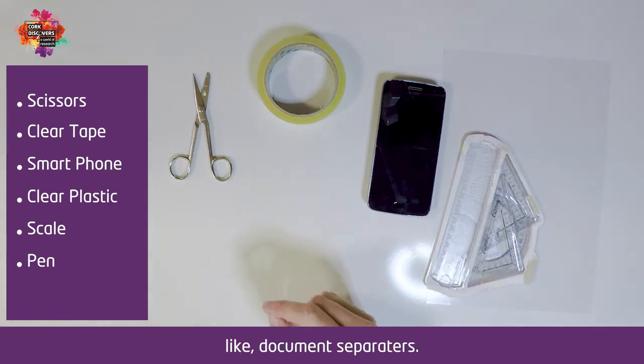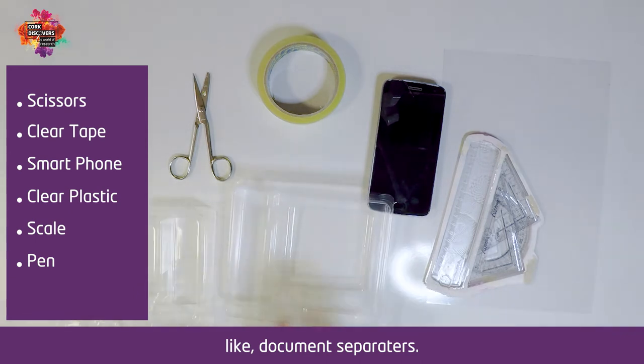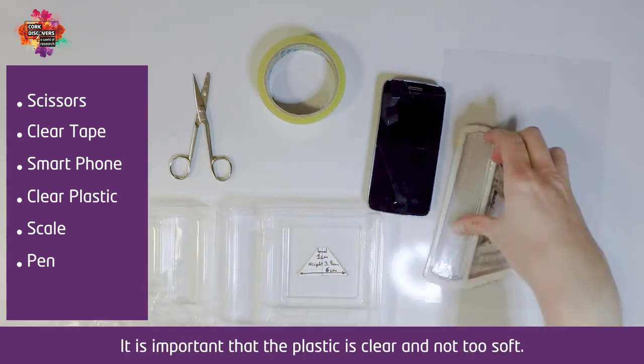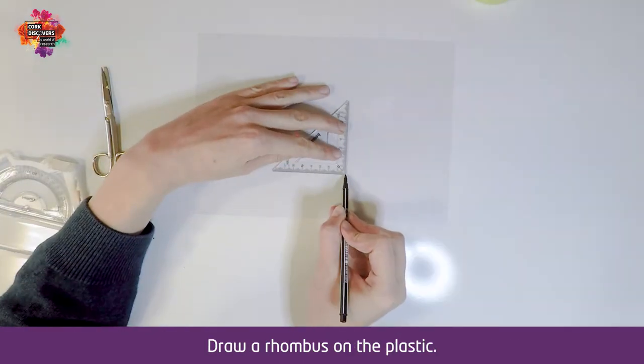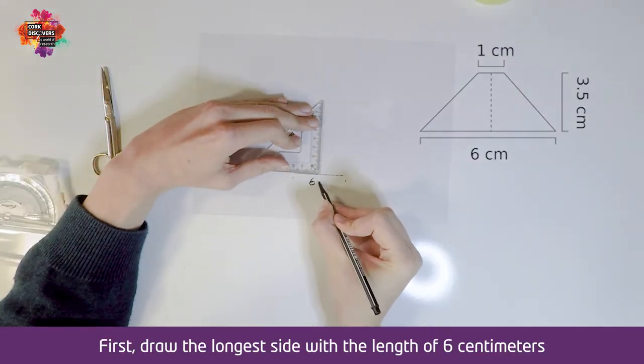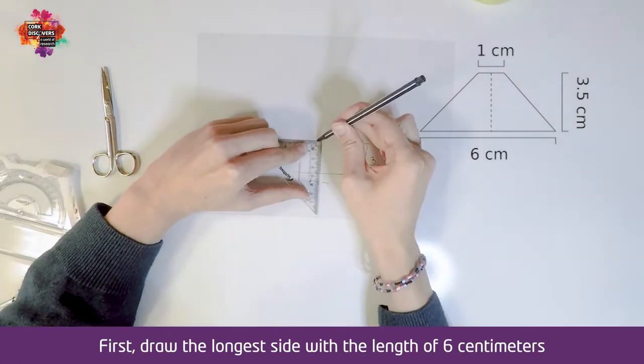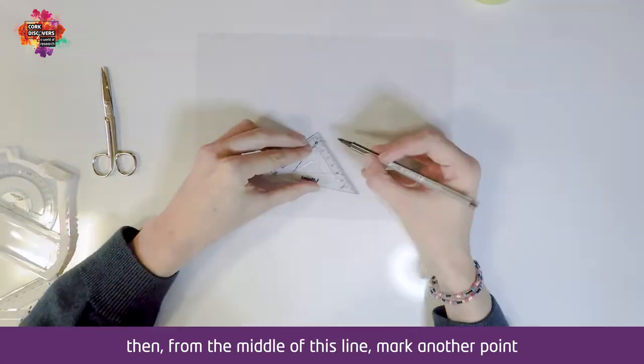It is important that the plastic is clear and not too soft. Draw a rhombus on the plastic. First, draw the longest side with a length of 6 centimeters. Then from the middle of this line, mark another point at a distance of 3.5 centimeters.